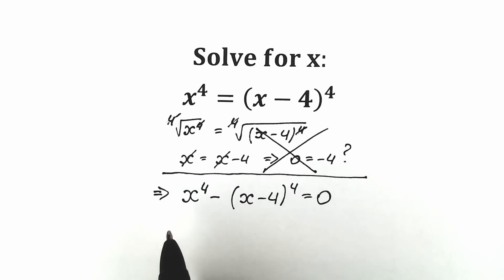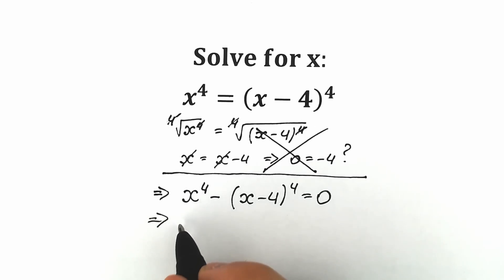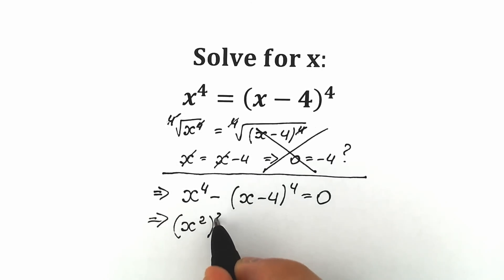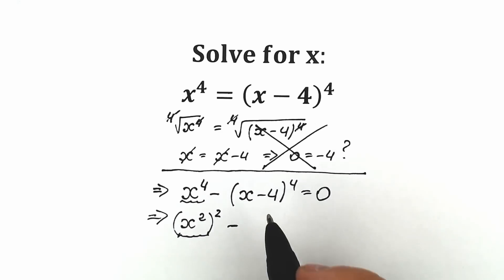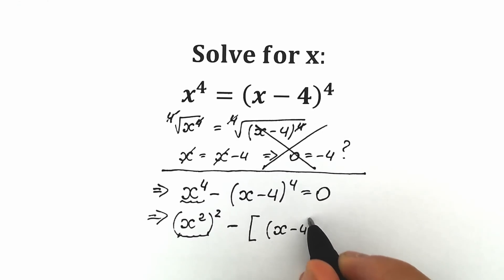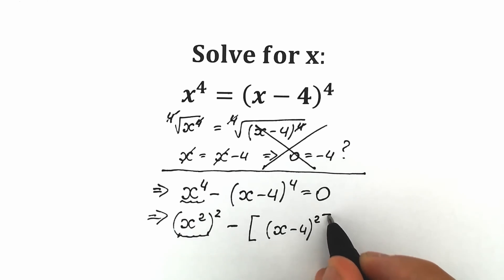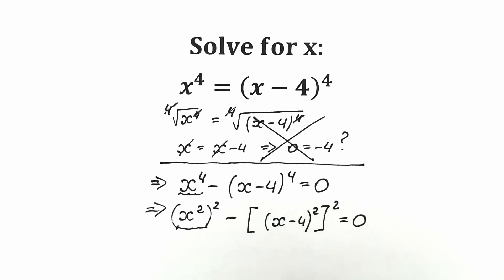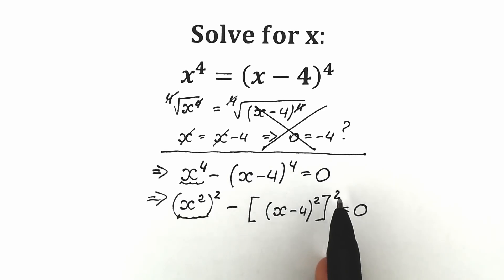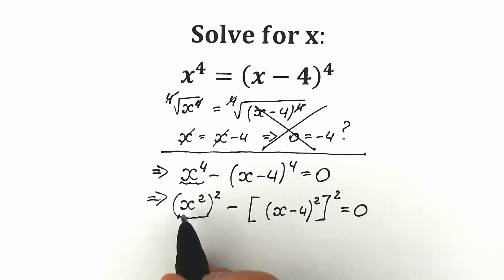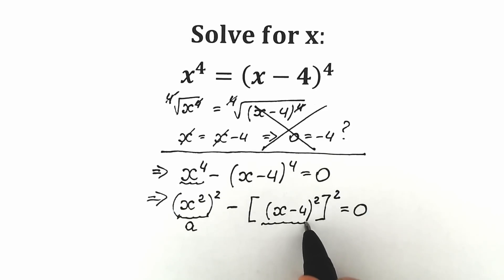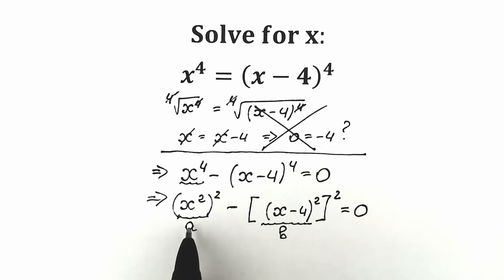Right now let's look closely at what we have. We can write x to the fourth power as x squared to the second power. The same thing with x minus 4 to the fourth power — we can write it as x minus 4 squared, all raised to the second power, equal to zero. This changes nothing for us, but it helps a lot. Now we have some expression to the second power, so let's call this expression a and this expression b, giving us a squared minus b squared.